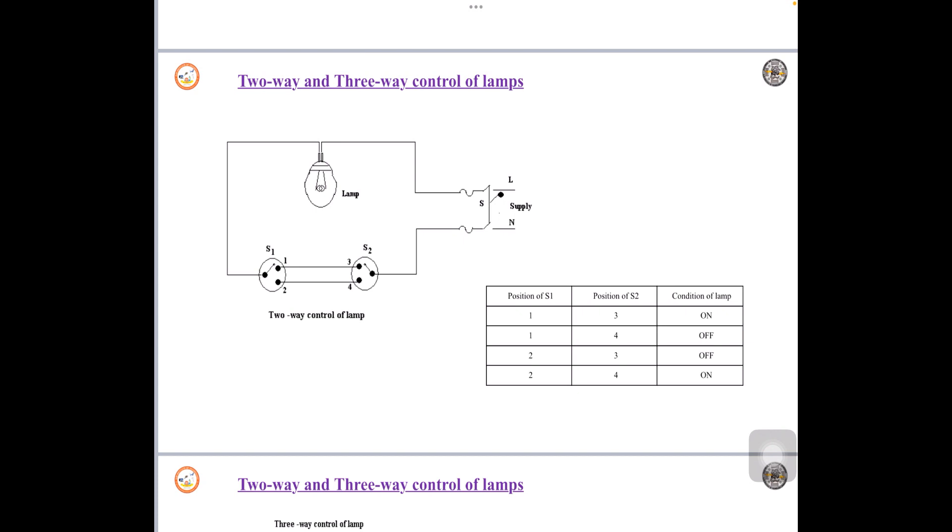Generally 2-way control of lamp is also called staircase wiring. They are commonly used for staircase and corridors. Also it can be utilized for lighting, bedrooms, fans, big halls.